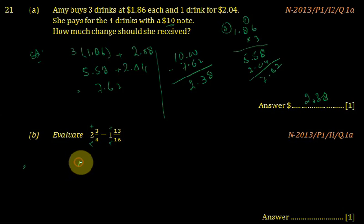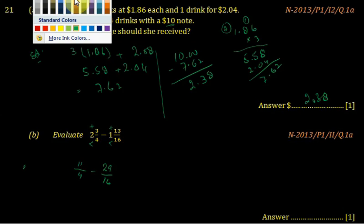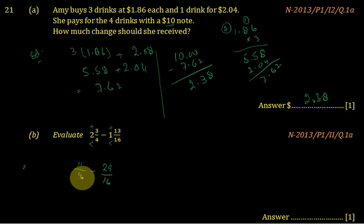Convert to improper fractions: 4 goes into 8, and 3 is 11/4, minus 16 and 13 is 29/16. And to make this number easy to 16, we multiply this number by 4, and we multiply by 4 at the numerator as well.